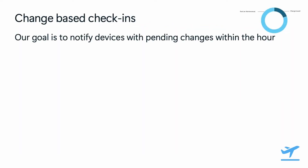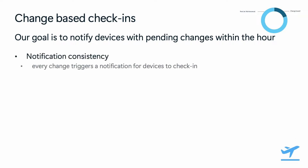Now let's go a bit more in depth on specific check-in improvements, starting with change-based check-ins. Our goal is to notify devices with pending changes within the hour. This requires the notifications and device check-in loop to be reliable and fast. First: ensuring consistency when we notify devices. In the past, we would notify devices on an initial first change, but there would be cases — like when multiple changes happen in rapid succession or when device or organizational quotas are hit — where additional excess notifications would be dropped.